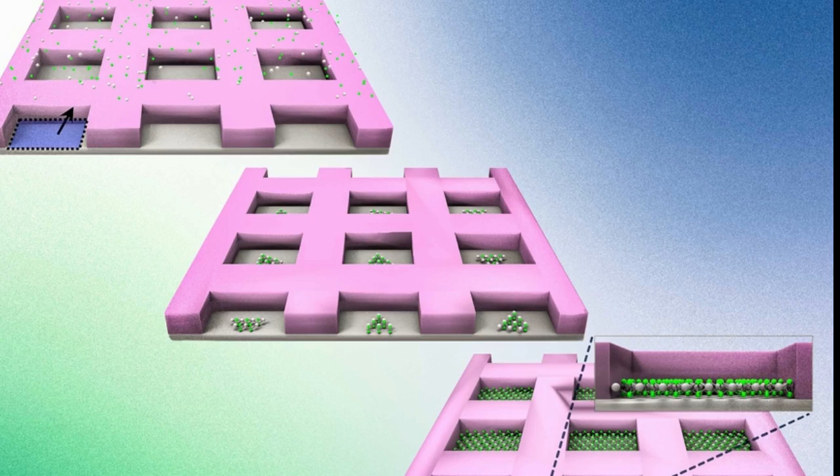They also applied the method to engineer a multilayered device. After covering a silicon wafer with a patterned mask, they grew one type of 2D material to fill half of each square, then grew a second type of 2D material over the first layer to fill the rest of the squares. The result was an ultra-thin, single-crystalline, bilayer structure within each square.